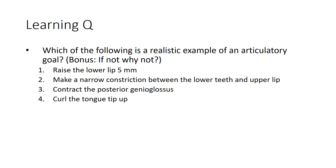Statement two—'make a narrow constriction between the lower teeth and the upper lip'—is the best answer. It has just the right amount of vagueness: we want a narrow constriction, specifying what will make it and where, but no further details on exactly how. Statement three, 'contract the posterior genioglossus,' is too specific about the muscle involved. Statement four, 'curl the tongue tip up,' is a decent second-best answer but lacks a target location and doesn't indicate degree—whether we want a closure or just a narrow constriction—making it only half of an articulatory goal.